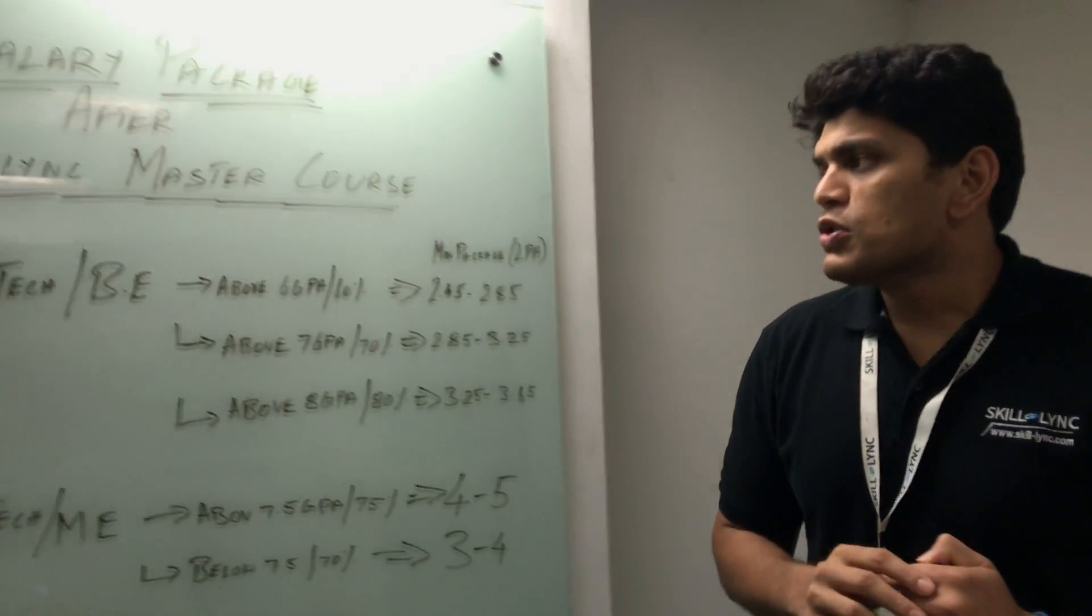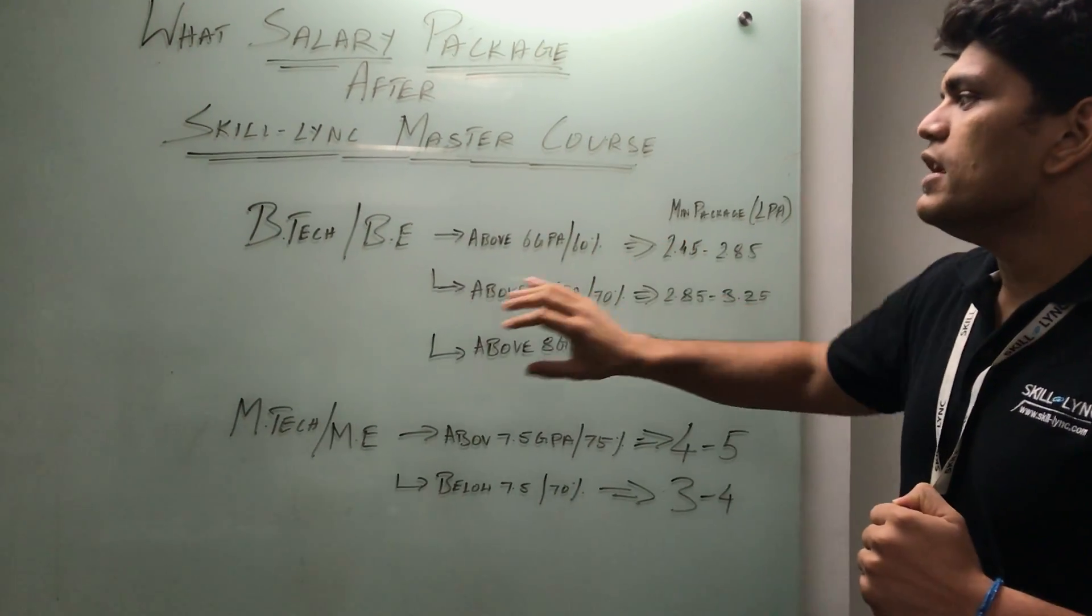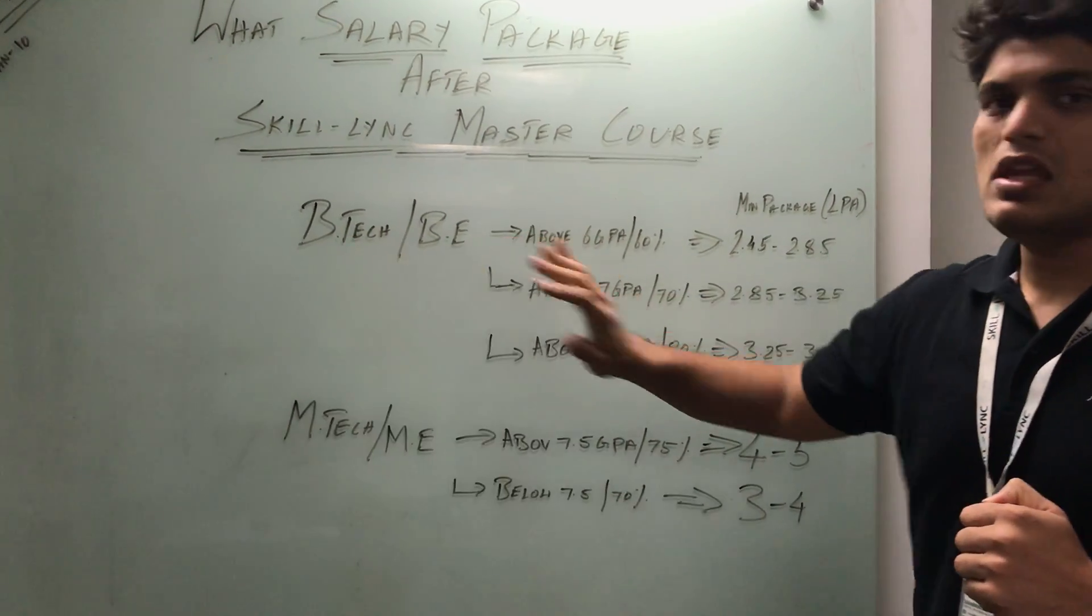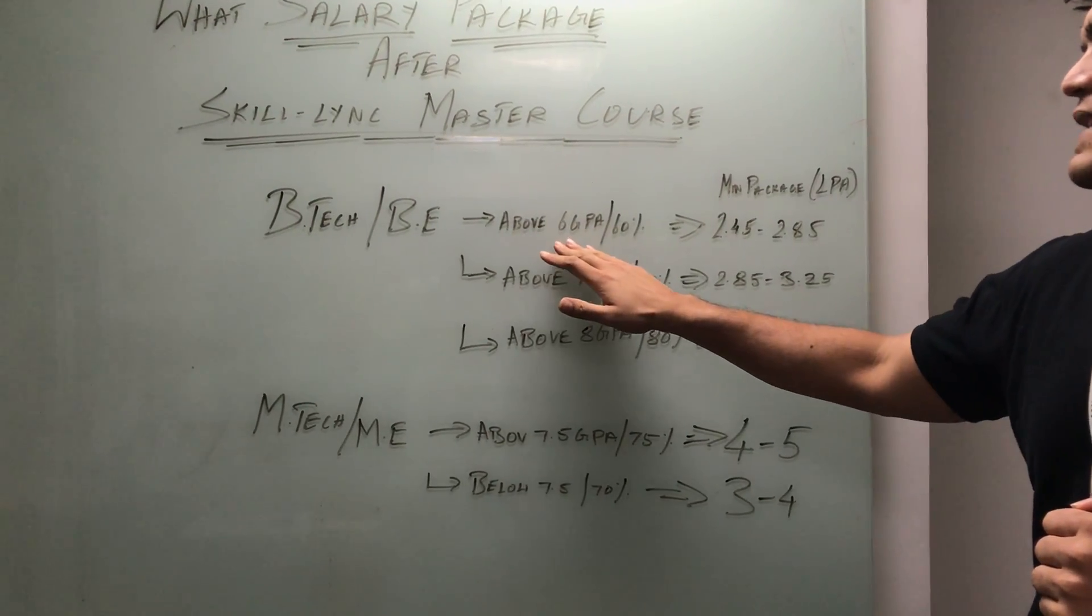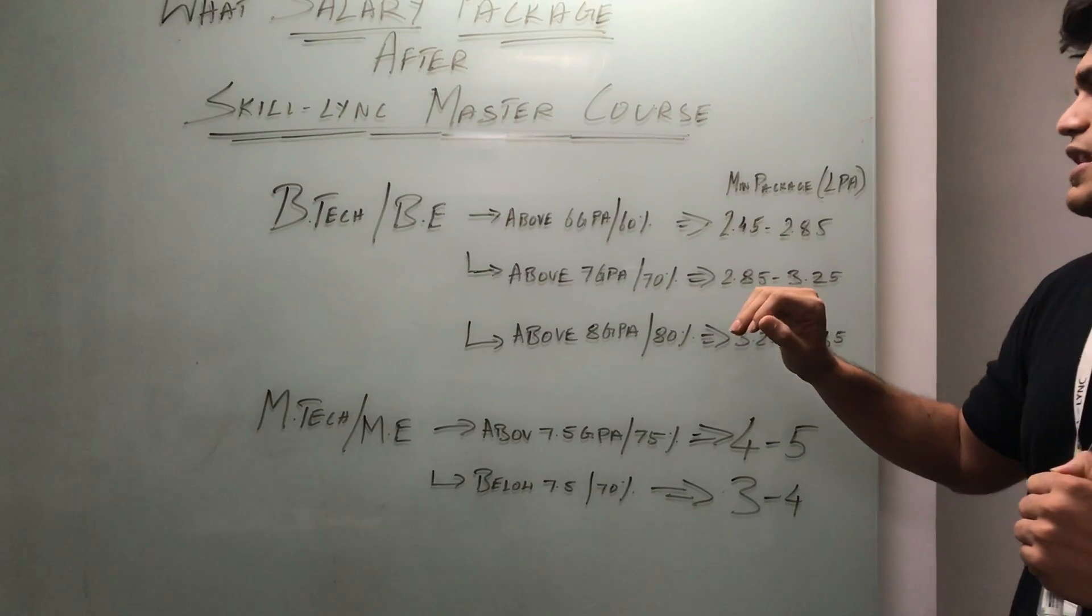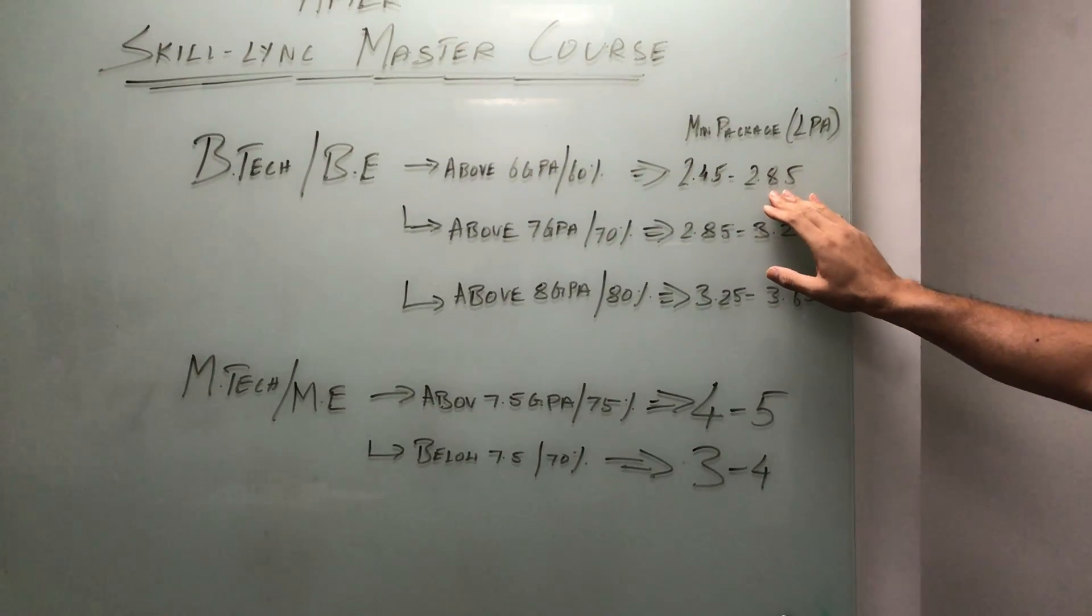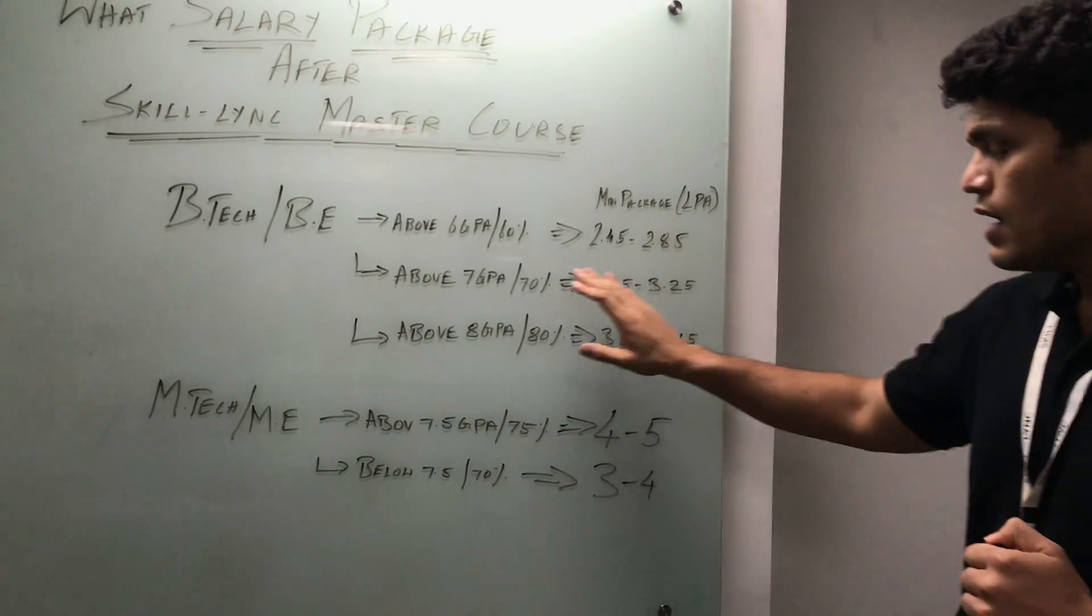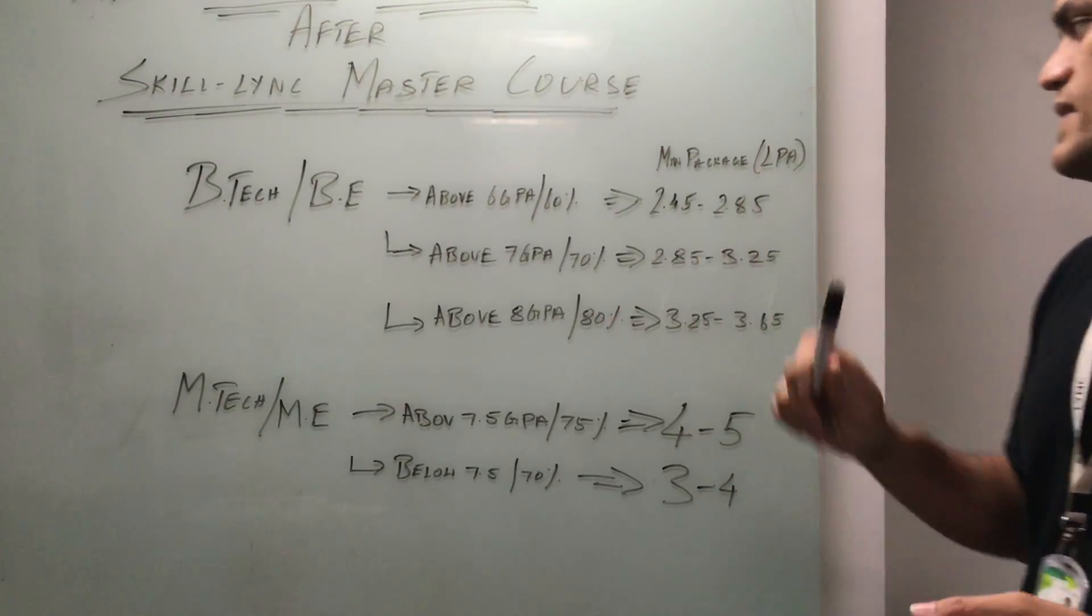If you take up a Skilllink master course and you're a BTech/BE fresher with grades in the range of 6 to 7 GPA, you can expect anywhere between 2.45 to 2.85 lakhs per annum. If your grade is above 7 GPA or 70%, you